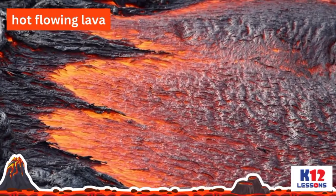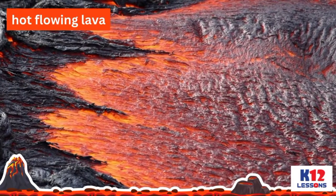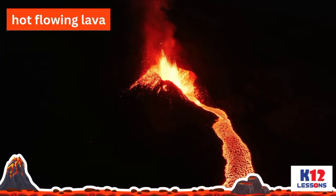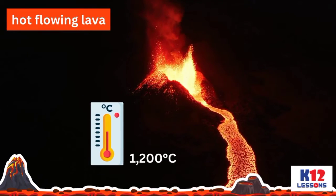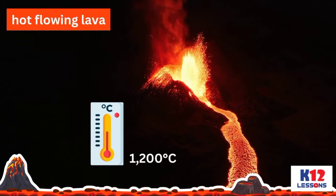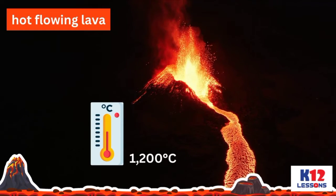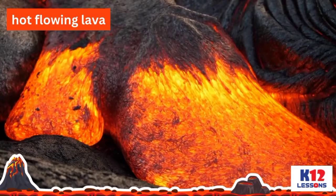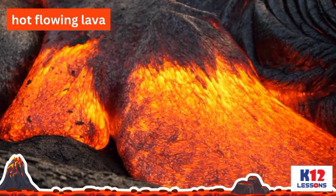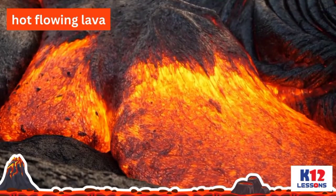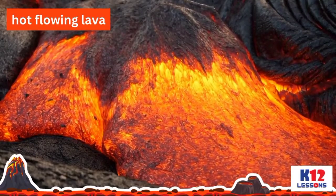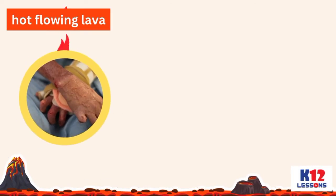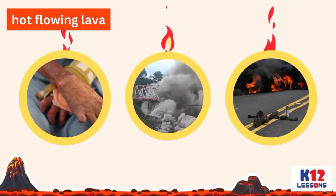Hot flowing lava from an erupting volcano can reach surrounding communities. Lava that leaves the vent of a volcano can reach around 1200 degrees Celsius immediately after being released. The temperature of the flowing lava drops significantly as it is exposed to the air, but is still able to maintain a significantly high temperature sufficient to burn almost everything on its path, including people and infrastructures like roads and bridges.